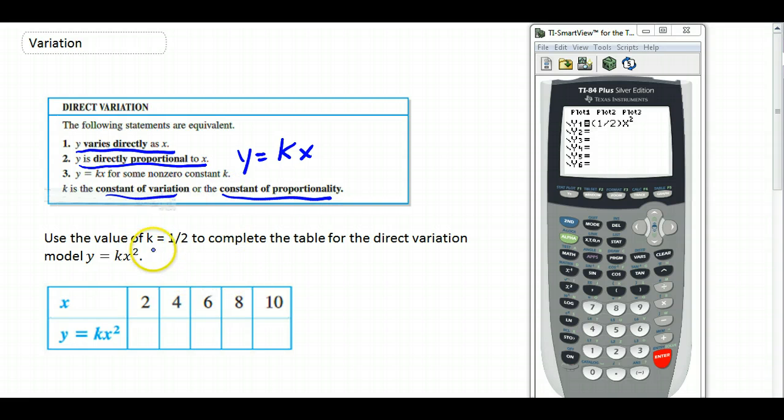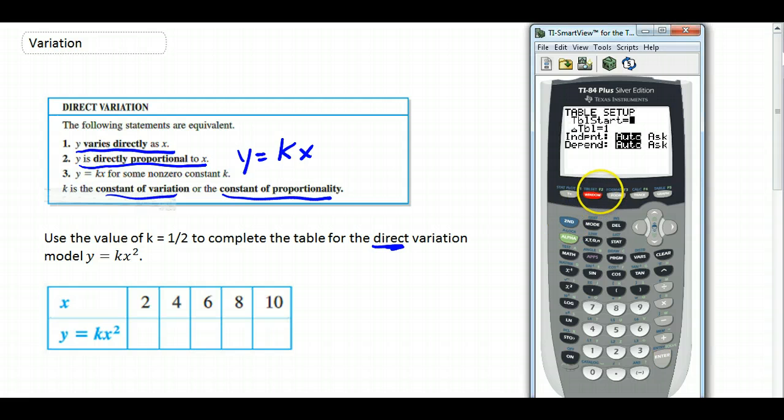So here's an example. Use the value of K equals one half to complete the table for the direct variation model Y equals KX squared. So we would say Y varies directly as X squared. Notice that I've put it into my Y equals. And now I'm going to go to my table set. I'm going to start my table at 2, and you'll notice that each X is increasing by 2, so I'll make my delta table be 2.